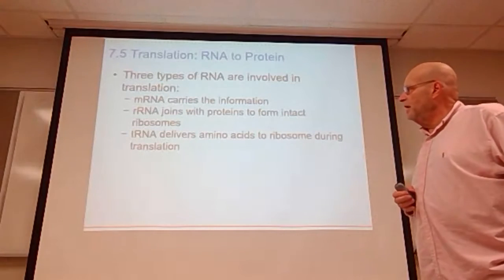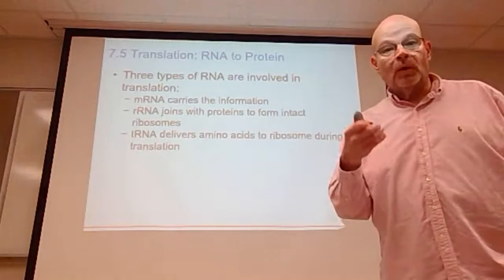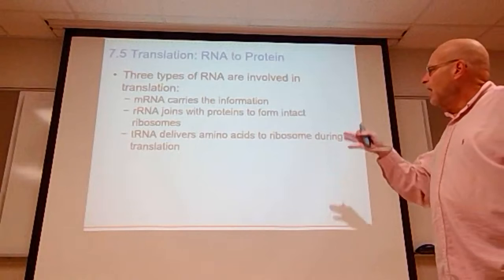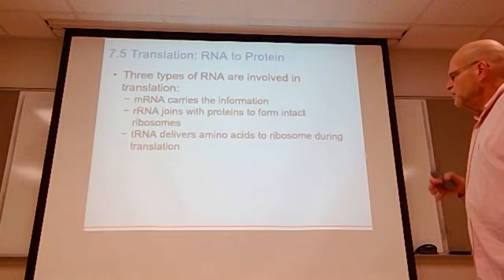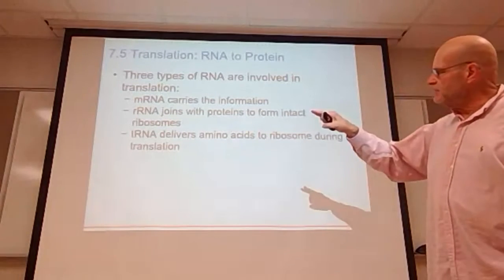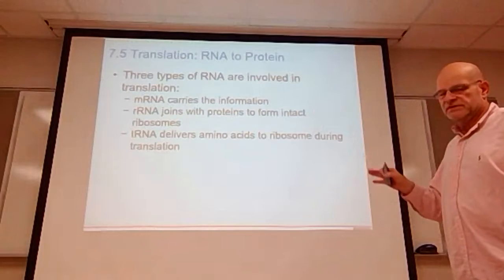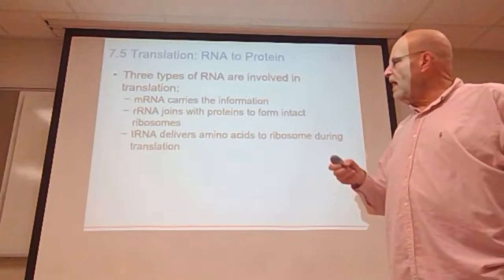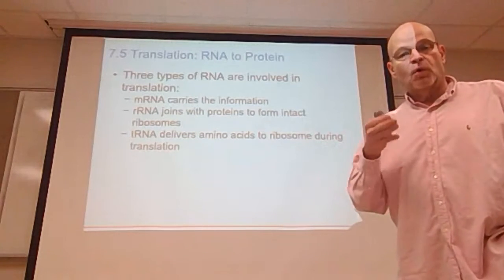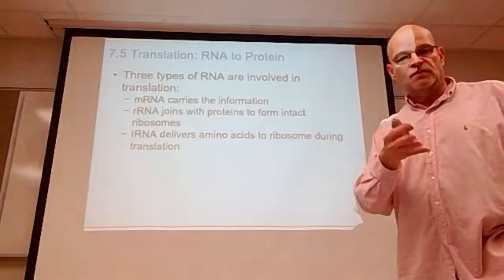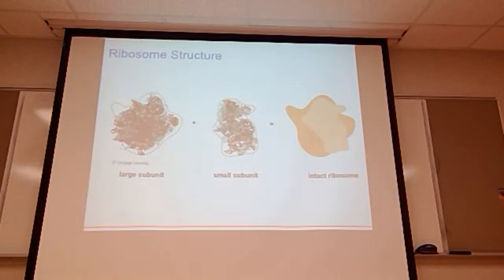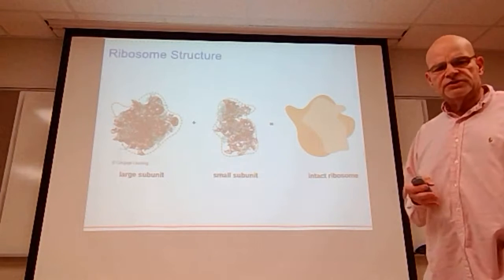Translation involves three types of RNA. Messenger RNA carries the information and is made in the nucleus. Ribosomal RNA joins with proteins to form the ribosome. Transfer RNA delivers amino acids to the ribosome during translation. So mRNA is the pattern, rRNA reads it, and tRNA brings the amino acids to the growing chain.